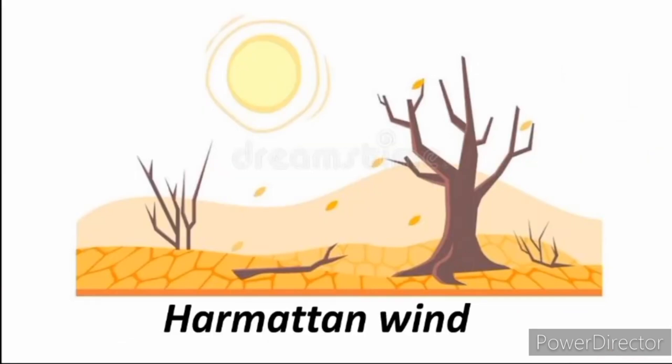This wind is called the harmattan wind. If you have noticed that during that season everywhere is cold and chilly, you have to put on warm clothes and cardigans, and your skin becomes very dry and white. The dry season is usually cold in the morning but very hot in the afternoon.